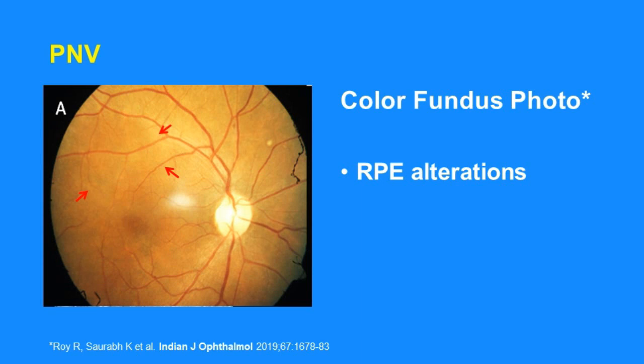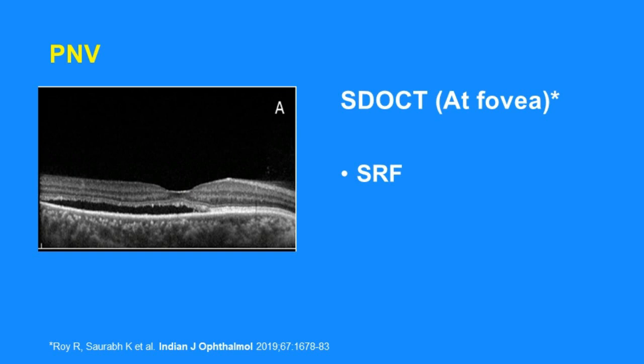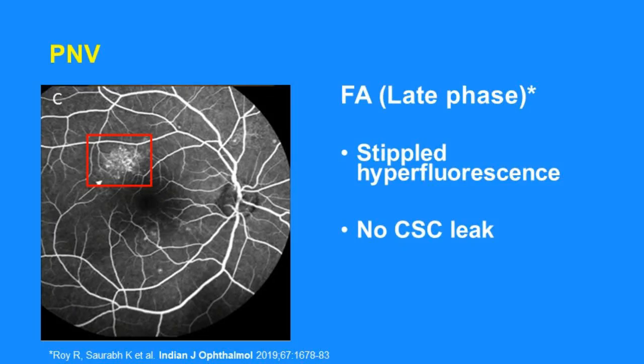This case highlights a 55-year-old lady who presented with subtle RPE alterations at the macula and diminution of vision with a visual acuity of 6/12. EDI OCT of the same patient shows subretinal fluid at the macular region in the right eye. Fundus fluorescein angiography at late phase shows stippled hyperfluorescence; there was no RAP-type leakage.